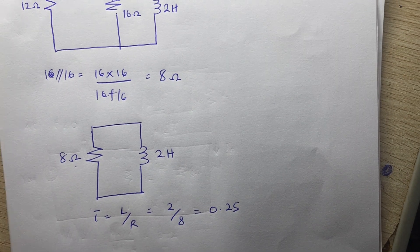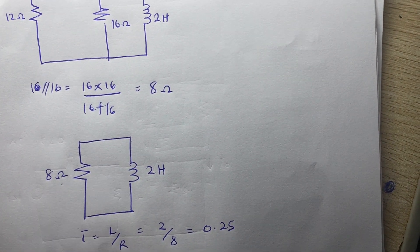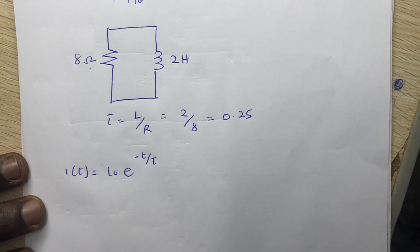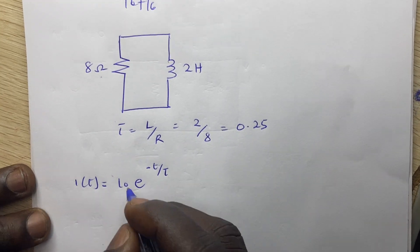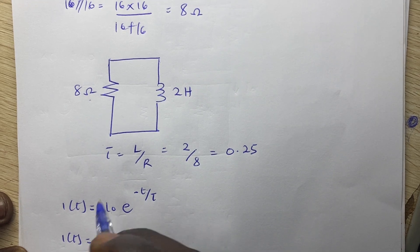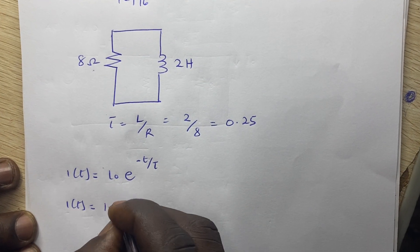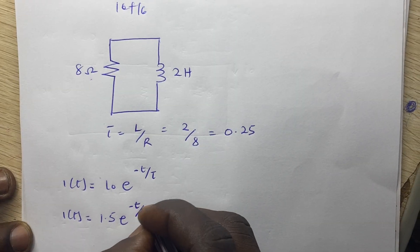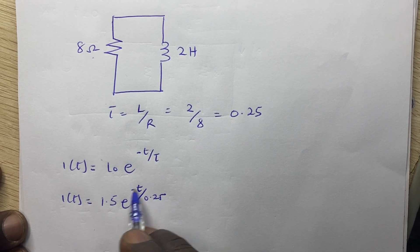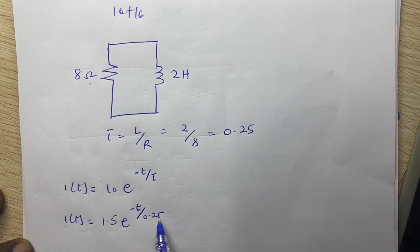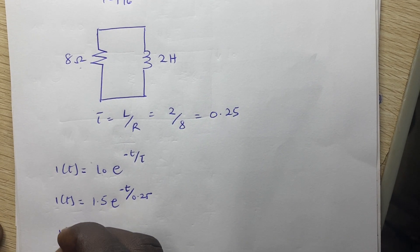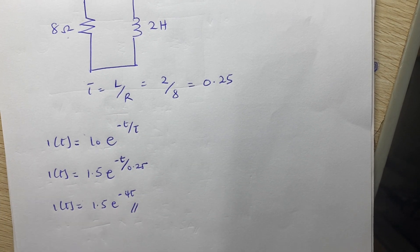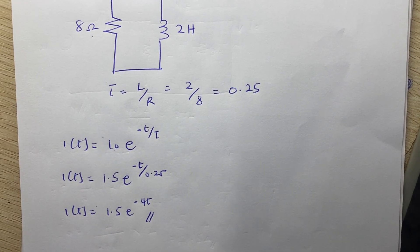From our previous formula, i(t) is simply I₀·e^(−t/tau). So i(t) here is going to be 1.5·e^(−t/0.25), which is the same as 1.5·e^(−4t). And this is our answer. Thank you very much for following. If this has been helpful, please don't forget to comment, like, and share.